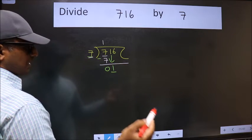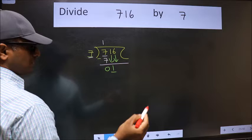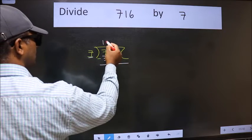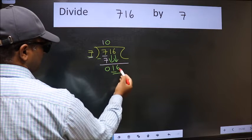So we should bring down the second number. And the rule to bring down second number is we should put 0 here. Then only we can bring this number down. Now 16.